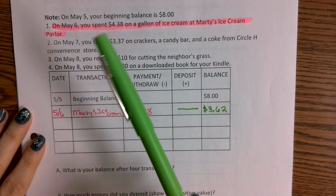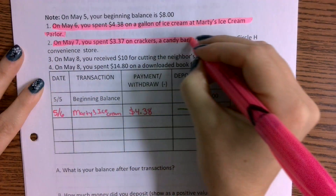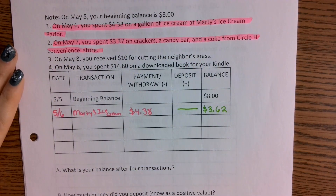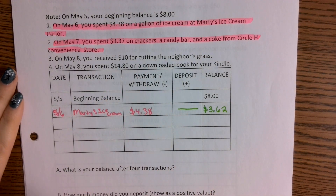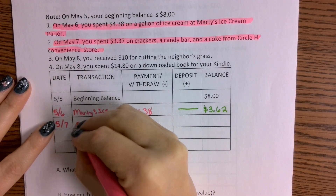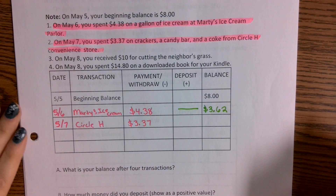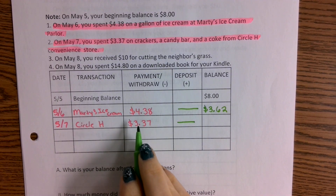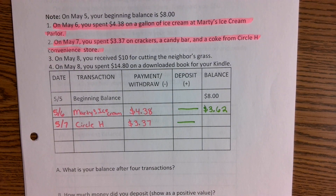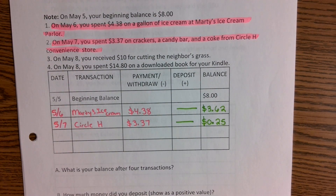Next transaction, May 7th: you spent $3.37 on crackers, a candy bar, and a Coke from Circle H Convenience Store — that's a withdrawal. The whole transaction was $3.37; the ledger just shows the store, not every item. Date 5/7, transaction 'Circle H,' withdrawal $3.37. Subtracting from $3.62 leaves $0.25 — still positive but getting dangerously close to zero.